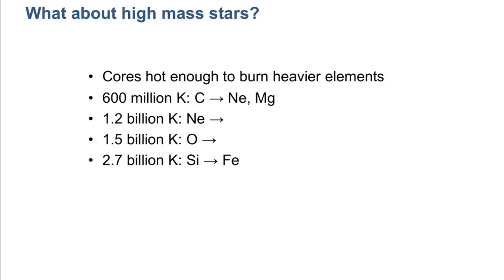Eventually oxygen will burn, and eventually silicon will burn. You go through these successive stages — run out of that element in the core, then burn the next higher mass element in the core, while still burning the lower mass element in a shell around it. In general, you're burning heavier elements in succession, and as you run out of a particular element, you're still burning it in a shell around the core.